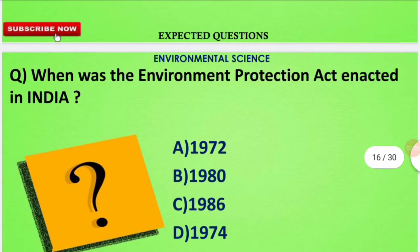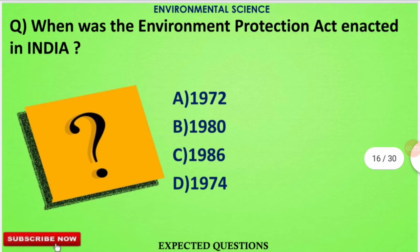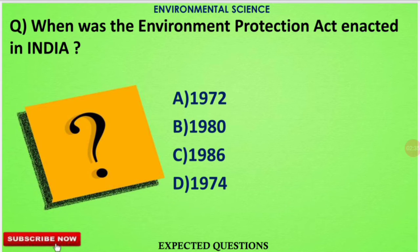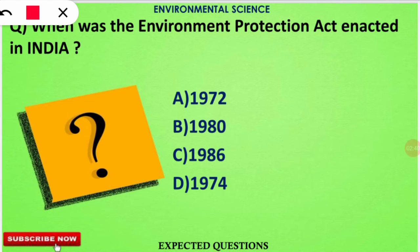The next question is: when was the Environmental Protection Act enacted in India? The correct option will be option number C — 1986. The EPA act was enacted in 1986.